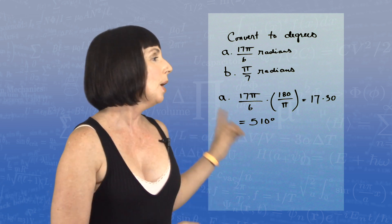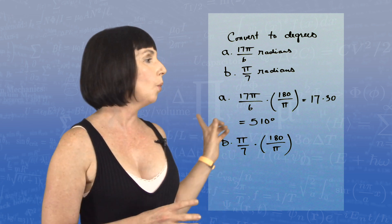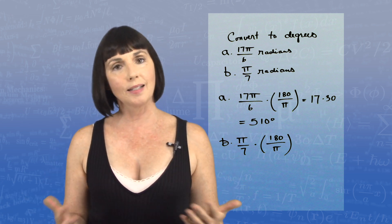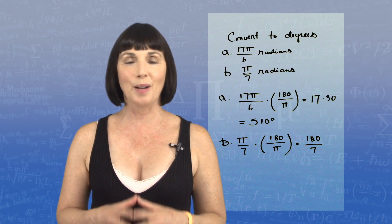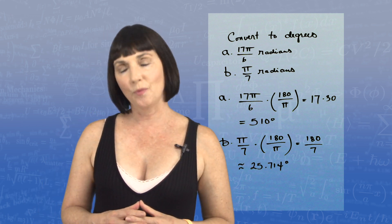How about this one? Pi over 7. Same thing. I have pi over 7 times 180 over pi. The pi's cancel out, so I have 180 divided by 7. And that is approximately 25.714 degrees.